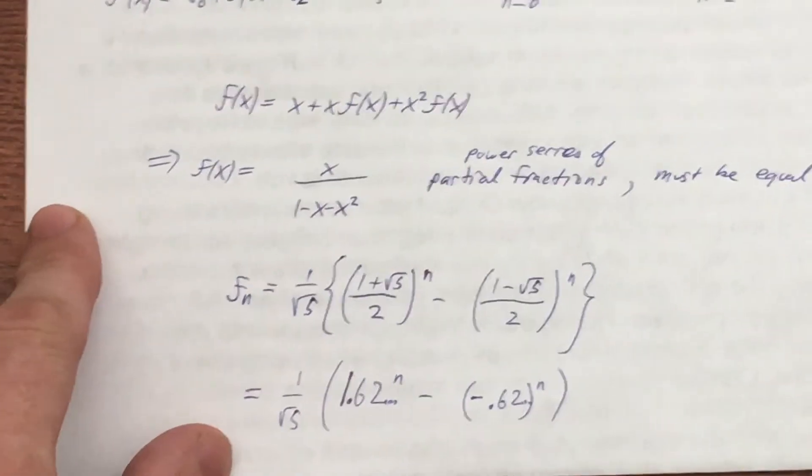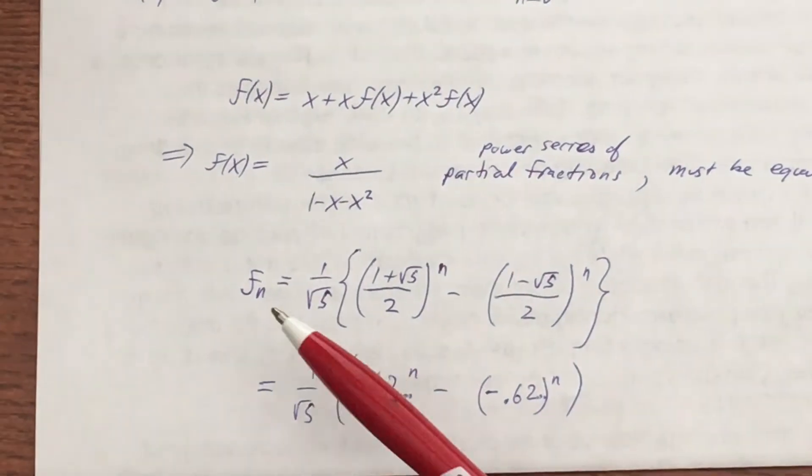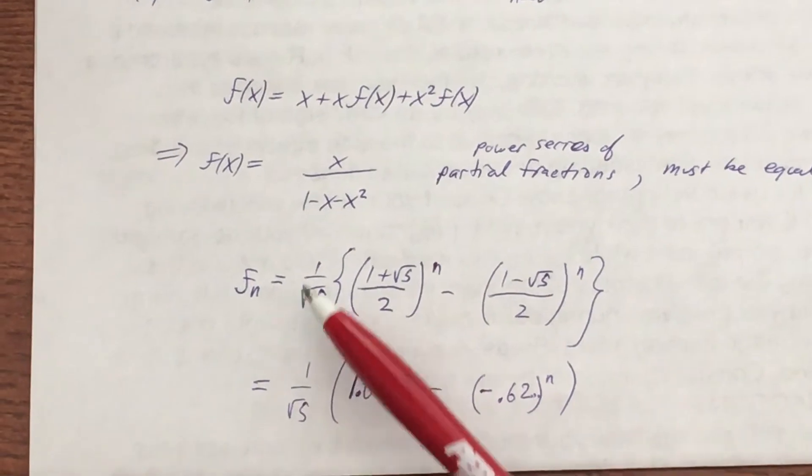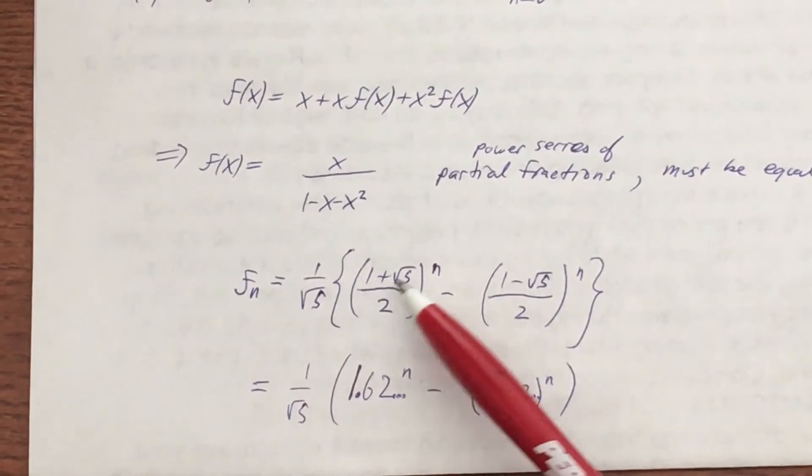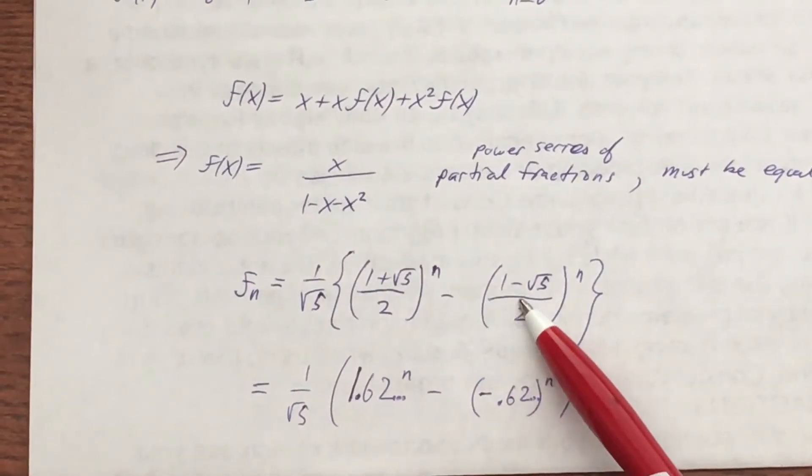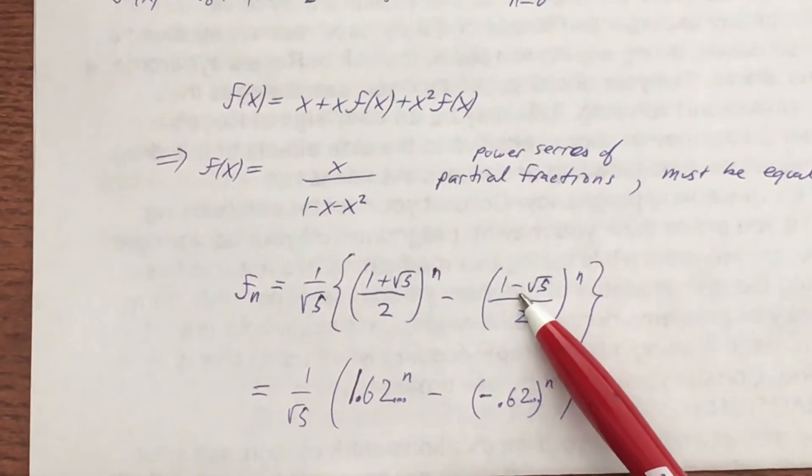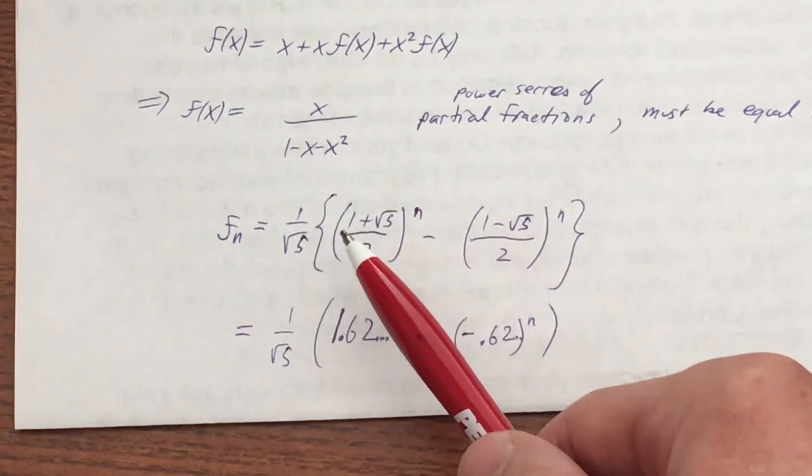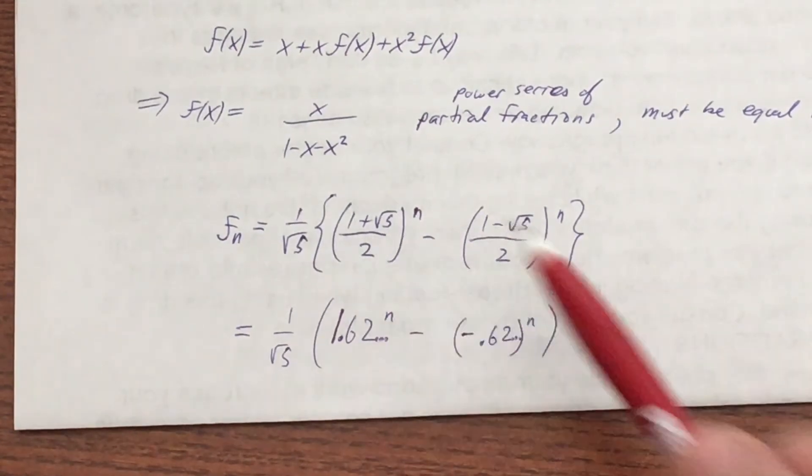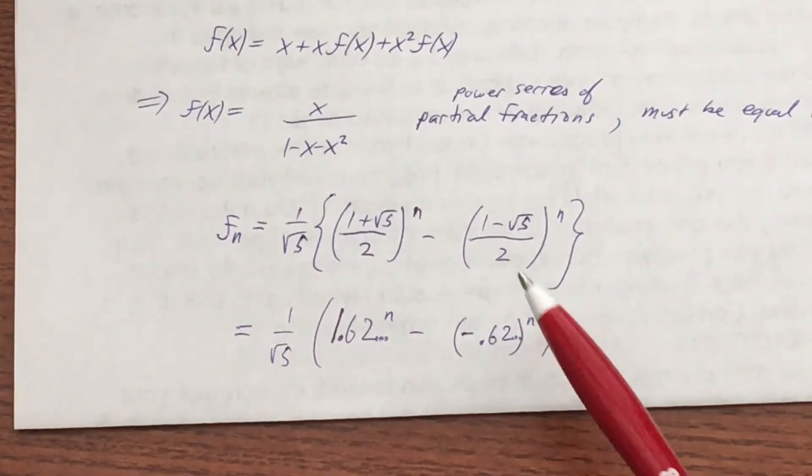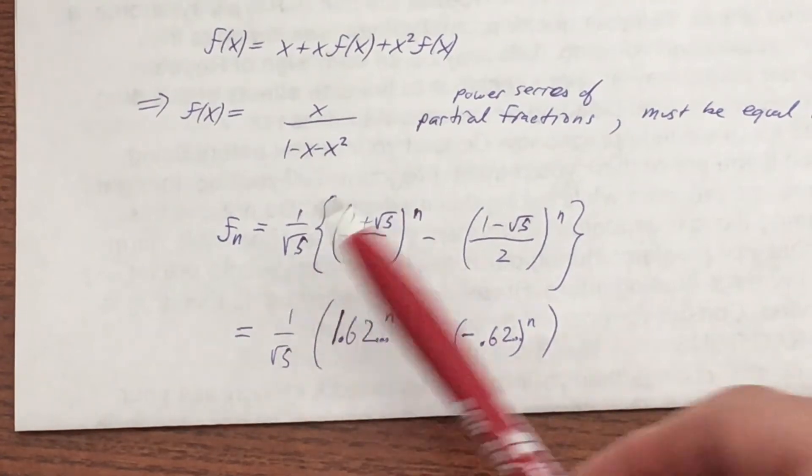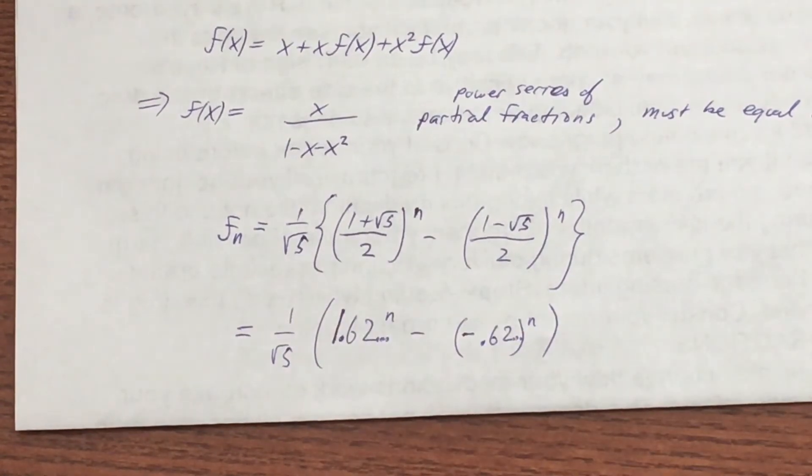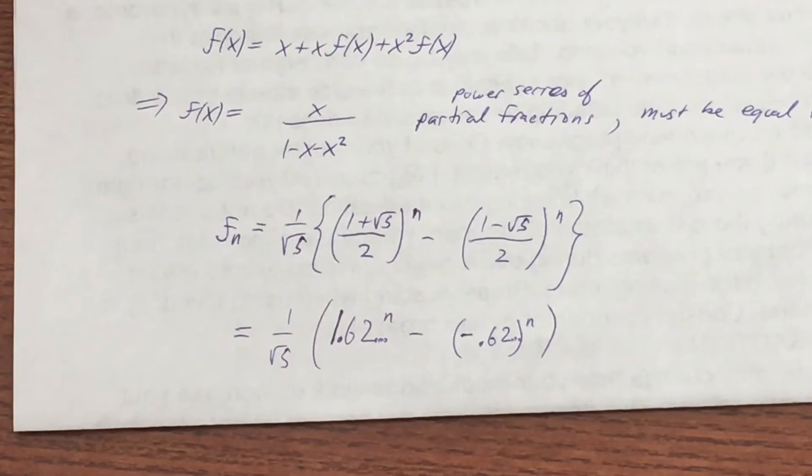Long story short, we can get a non-recursive definition for the Fibonacci sequence. So it's 1 over the square root of 5 times the golden ratio to the n times the negative of the reciprocal of the golden ratio to the n. We're going to use this formula in one of our ways of programming the Fibonacci sequence.